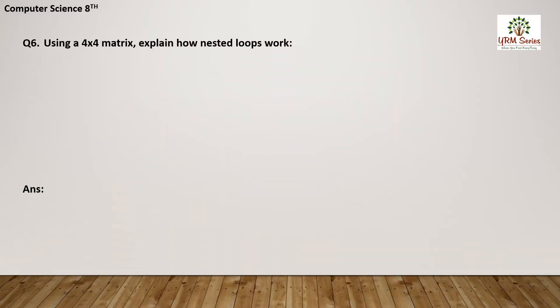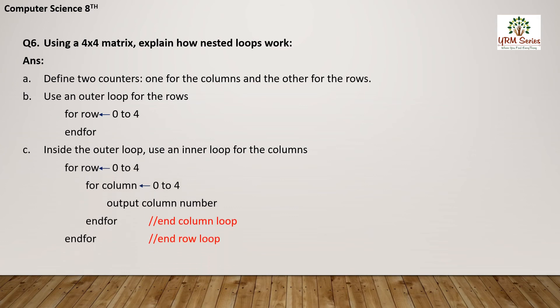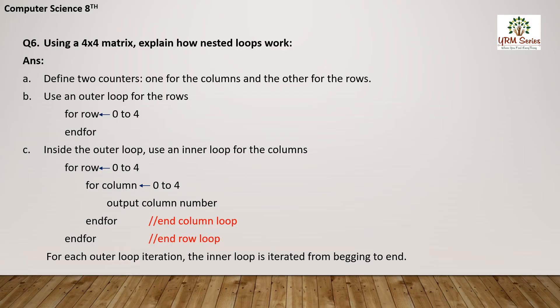Question number 6 is: using a four-by-four matrix, explain how nested loops work. A four-by-four matrix means four rows and four columns. Nested loop means a loop within a loop — you can use a for loop within a for loop, or a while loop within a while loop. First, define two counters: one for the column and one for the row.